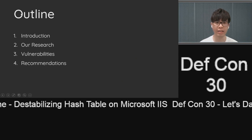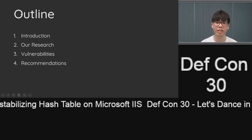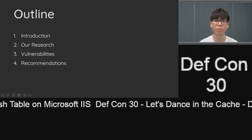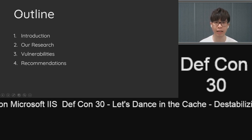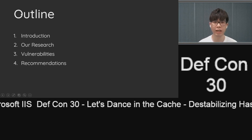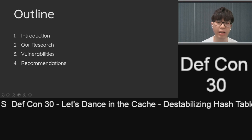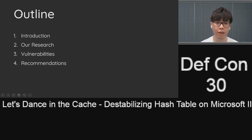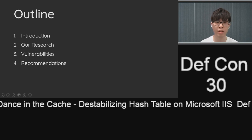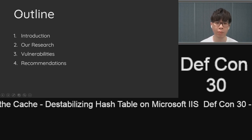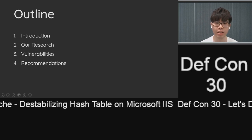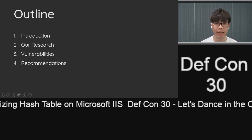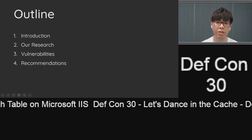This is the outline for today. First, we will introduce several essential concepts that are important to understand Microsoft IIS internals and our topic today. After having a good understanding of IIS internals and the cache mechanism, we will elaborate on our research, followed by three different types of vulnerabilities. We will also demonstrate how we apply the attacks to Microsoft Exchange Server as a showcase, and provide mitigations, recommendations, and future works.